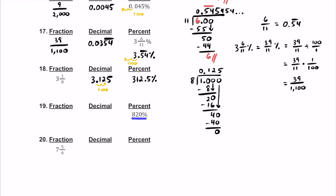For number 19, we have 820 percent. The first thing I'm going to do is make this a decimal. Let's divide this by 100 and slide the decimal twice to the left. If we do that, the decimal is going to be 8.20 — but we can just write 8.2. We can read this as 8 and 2 tenths. So we can simplify this by dividing both by their common factor of 2. If we do that, we're going to have 8 and 1 fifth. So as a completely simplified fraction, we write 8 and 1 fifth.